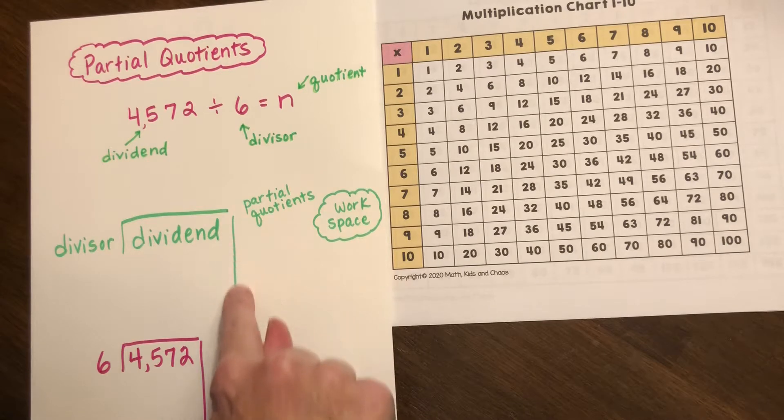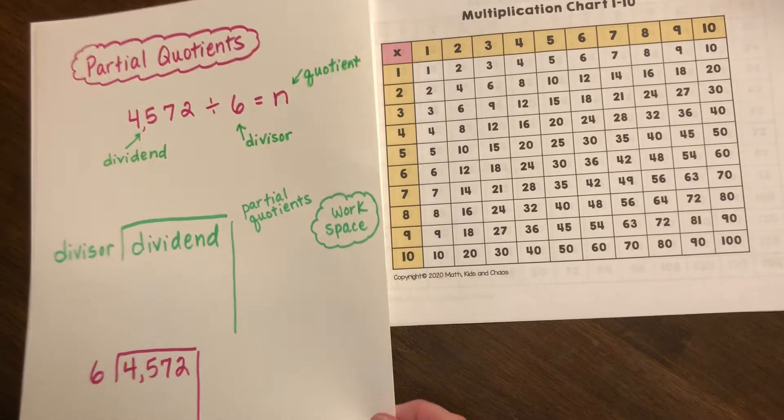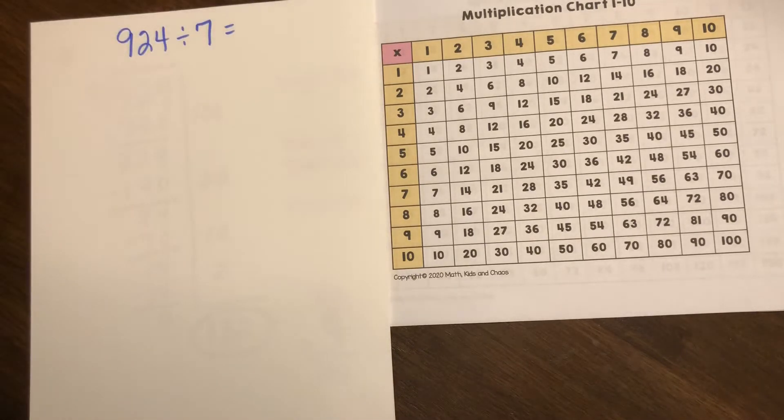For partial quotients we will have a vertical line as indicated so that we can separate our partial quotients and keep our work organized, and make sure you have plenty of workspace to share your thinking and your ideas about multiplication facts.